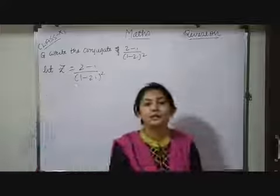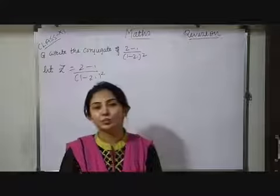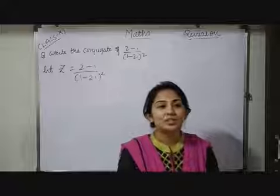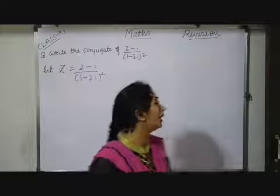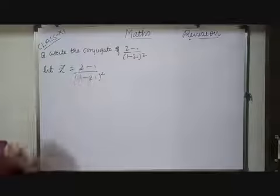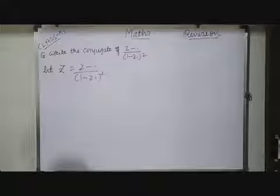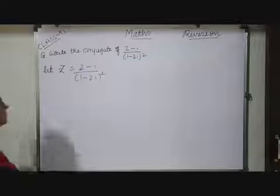Now, as we are knowing that a conjugate of a number we are denoting as z bar and that we can obtain by changing a sign of imaginary part. But here in the numerator and denominator in both we are having imaginary part. So, that time first of all we have to simplify it.